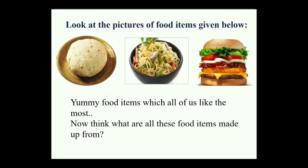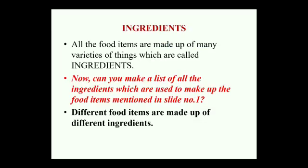Can you think what these food items are made up of? Are these food items directly grown on trees? No. Are these food items directly grown on animals' bodies? No. Then how are these food items made? All the food items that we consume and eat are made up of a variety of things which are called ingredients. Ingredients are the small things which mix together in fixed quantities in order to produce our tasty and nutritious food.